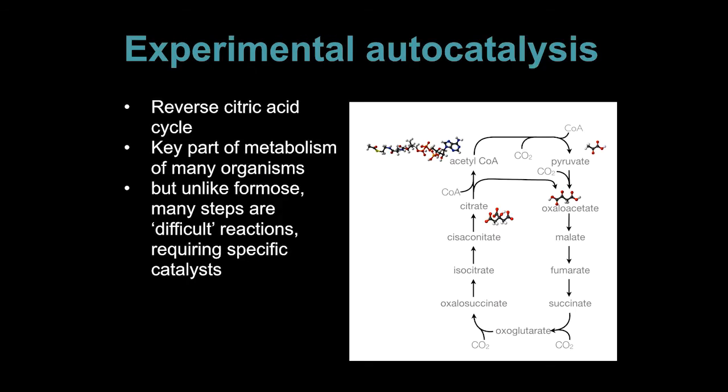Autocatalysis is a very active area of experimental research in several different contexts. One of these is understanding the origin of biological metabolites or other molecules that may have originally played similar roles. One example that people look at is the reverse citric acid cycle, which is a fairly fundamental part of the metabolism of most autotrophs. This is actually an autocatalytic cycle. It has a branching step, which is highlighted here. But unlike the Formose reaction, these reactions are performed inside the cell by sophisticated protein enzymes. So it's an active area of research whether there are minerals that can catalyze reactions that are analogous to these and could play the same sort of role.